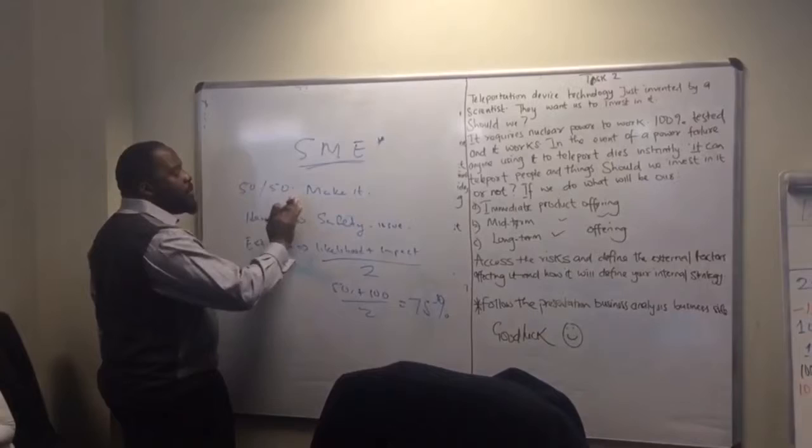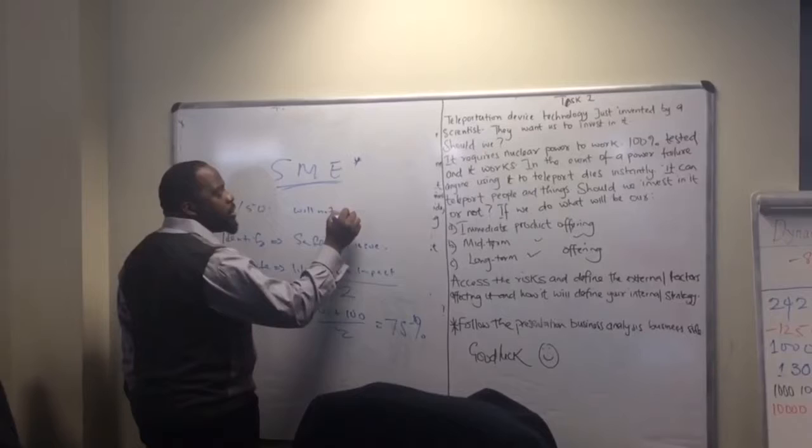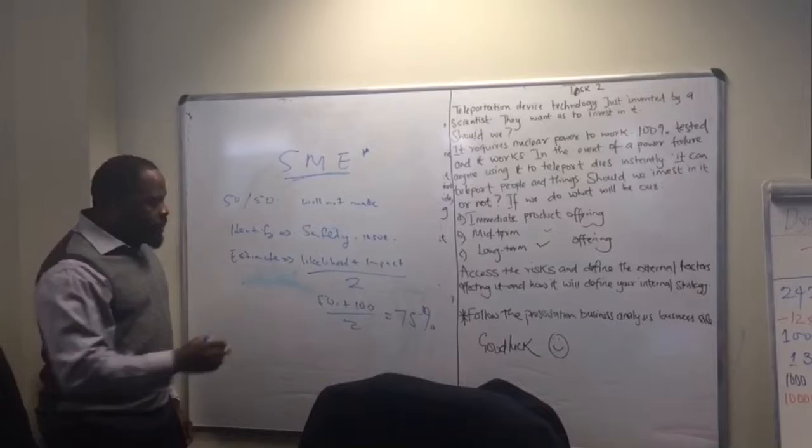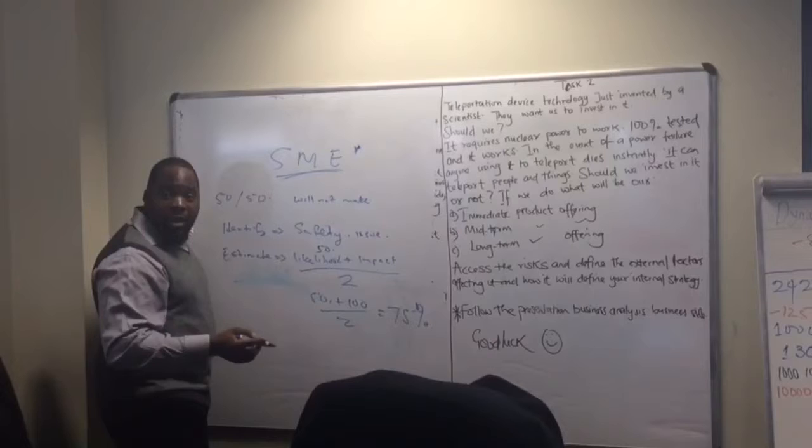Let me rephrase this. There's a 50% chance we will not make it. So what's the likelihood that we won't make it? That we won't make it, 50. If we don't make it, what will be the impact? If you have to put it at the percentage, it will be 100. 50 plus 100.